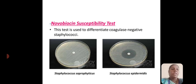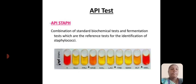The Novobiocin test is used to differentiate coagulase-negative Staphylococcus species. A clear zone around the colony indicates Staphylococcus epidermidis; no zone indicates Staphylococcus saprophyticus. The API test uses a combination of standard biochemical tests and fermentation tests, which are the reference tests for the identification of Staphylococcus.